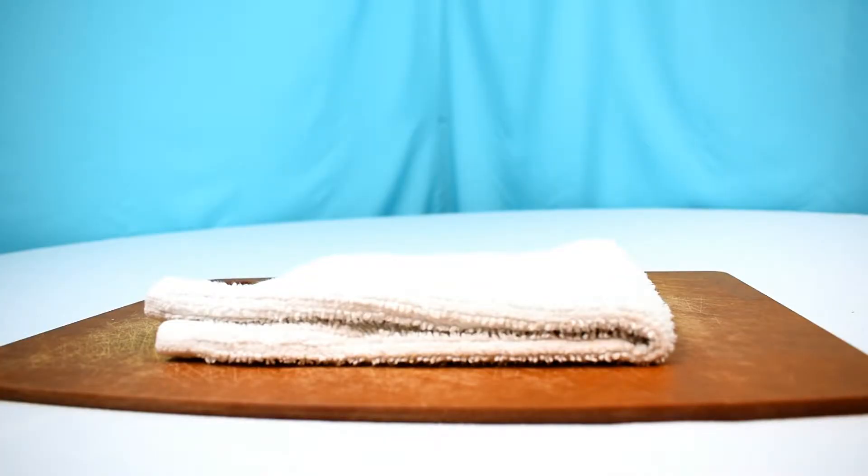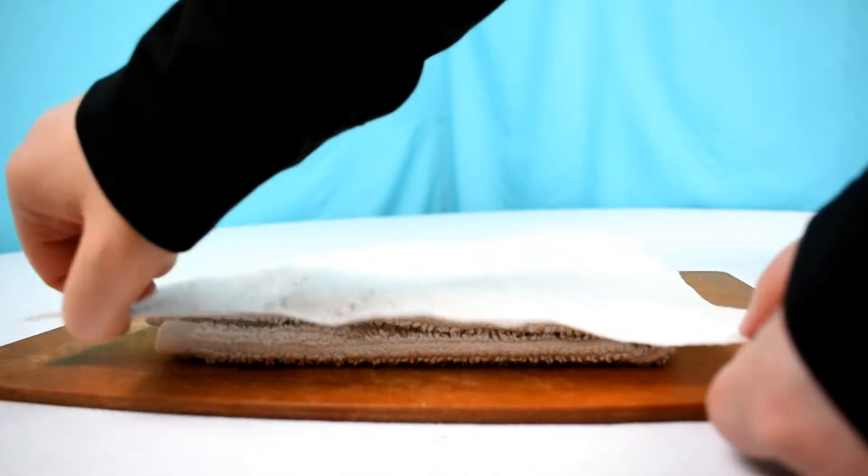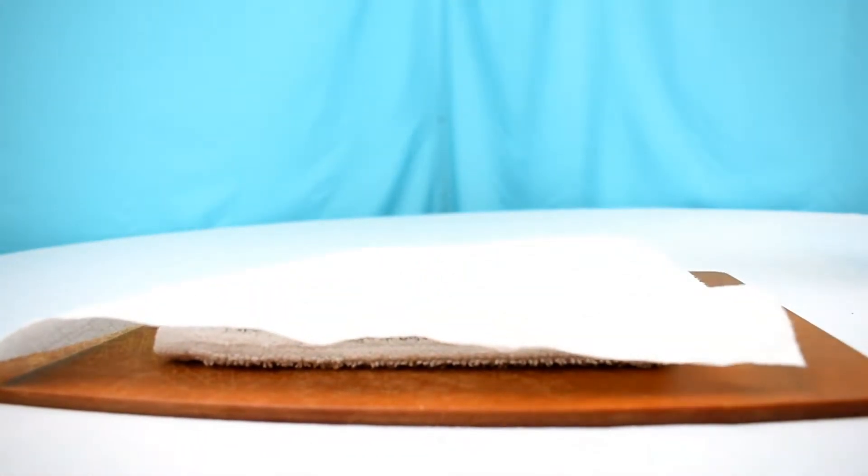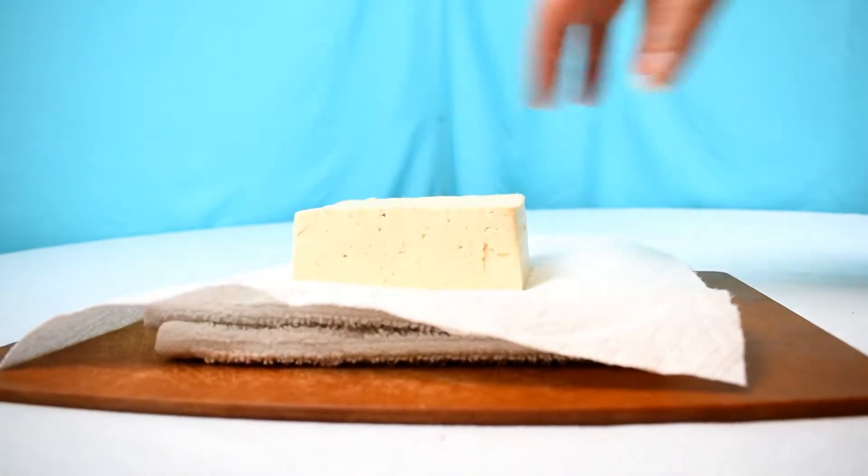So you could use a tofu press if you want to, but I don't have one. Most people probably don't have one. Most vegans probably don't even have one. So here I have a cutting board with a hand towel on it. And then I'm going to place a paper towel on top of the hand towel. That's because you don't want hand towel fibers in your tofu. That is gross.